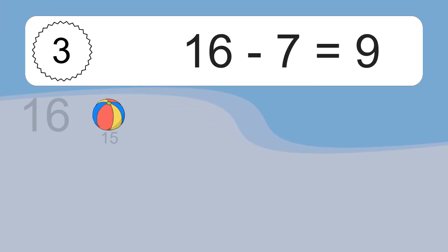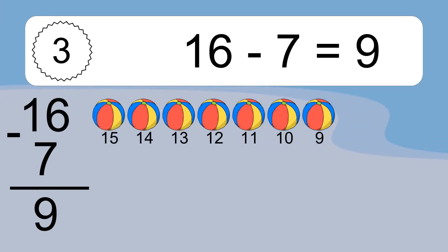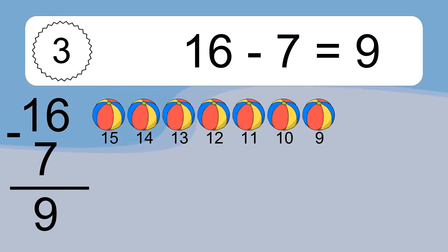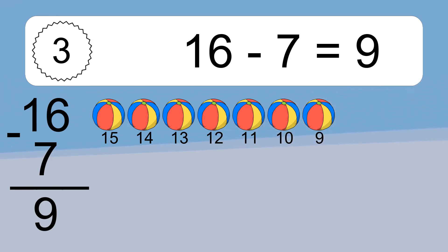16 minus 7 equals what? 16 minus 7 equals 9. Let's count it: 15, 14, 13, 12, 11, 10, 9.